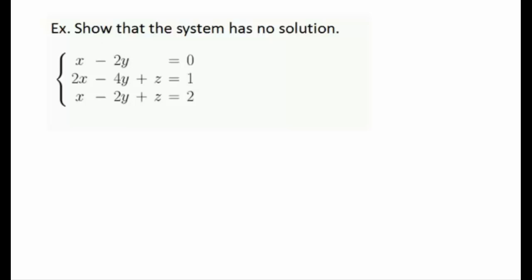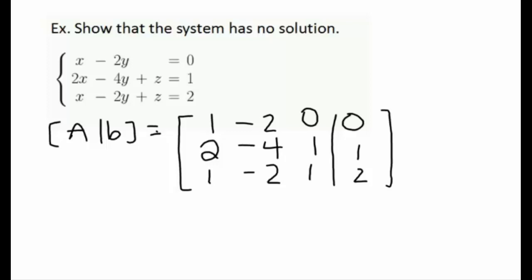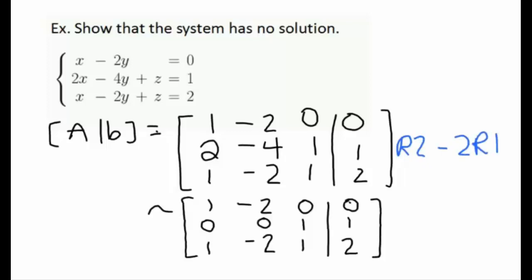Now let's look at a case where we have no solution. First, we transfer the linear system into an augmented matrix. Our goal is to reduce this augmented matrix into reduced row echelon form. Once we reach RREF, we can determine what kind of solutions we'll have. We already have a leading one in the upper left corner, so we'll use it to create zeros below. The operation row two minus two times row one will help us do that. If you need to review elementary row operations, please go back to our previous lessons.